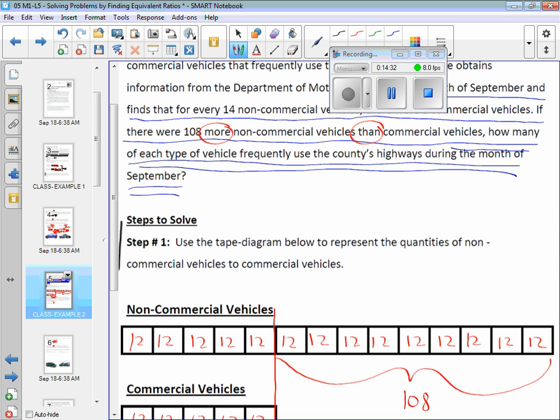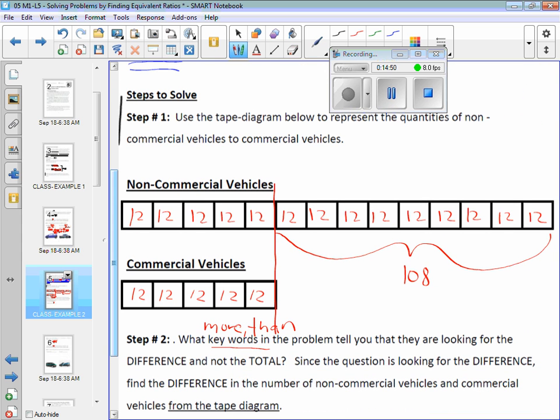Once you've got that magic number, go back and let's revisit the question. What are they asking? How many of each type of vehicle is what they're asking. So what do you have to do? What's our final step here? If we use multiplication, it's 12 times what for non-commercial vehicles? 14. And for commercial vehicles, 12 times what? 5. You got it.